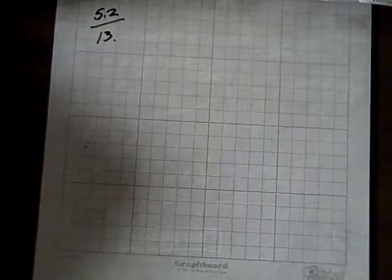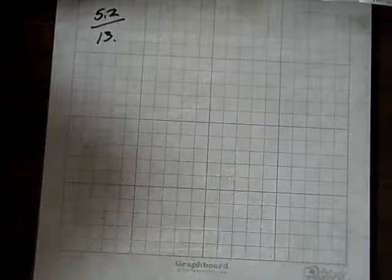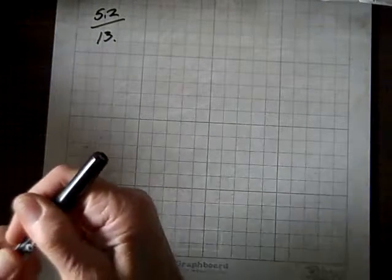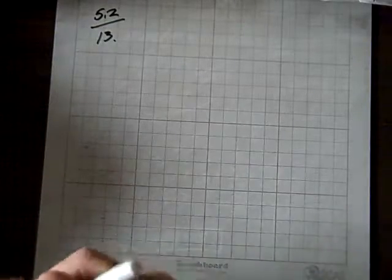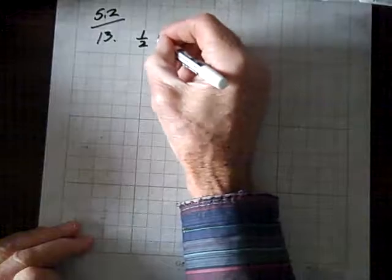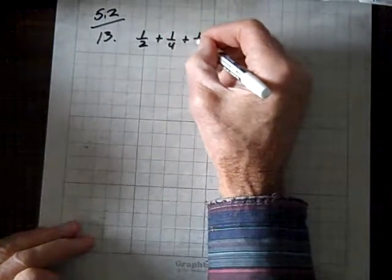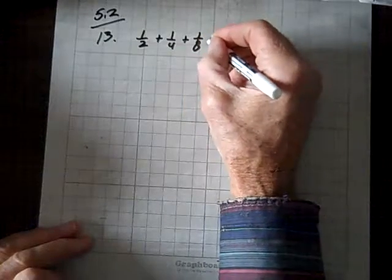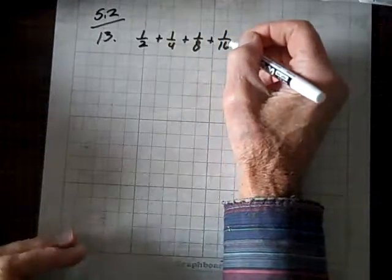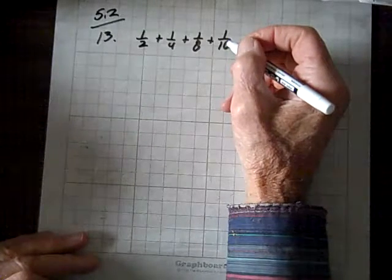Well, now we're doing question 13 in section 5.2, and we're given the terms one-half plus one-fourth plus one-eighth plus 1 over 16, and we have to write that in terms of summation notation.